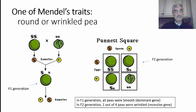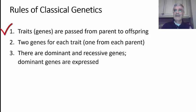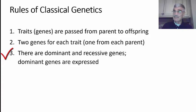Mendel studied other plants as well and studied many generations of pea plants to come up with this model for the inheritance of traits based on dominant and recessive genes. The rules of classical genetics revealed by Mendel's studies: one, traits are passed from parent to offspring via what we call genes; two, there are two genes associated with each trait, one gene coming from each parent — one from the father and one from the mother; three, there are dominant and recessive genes, and the dominant gene controls whether or not the trait is expressed.